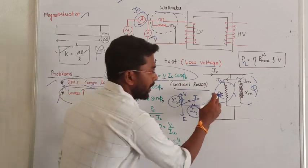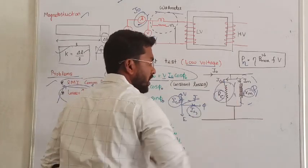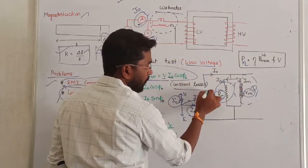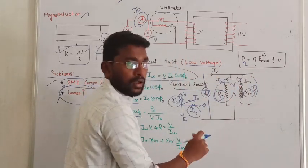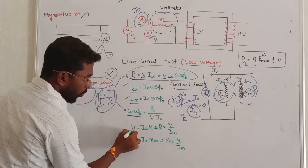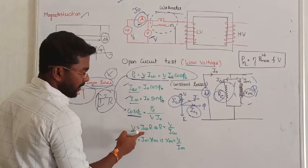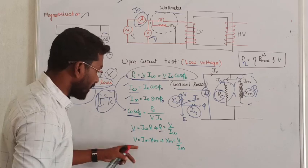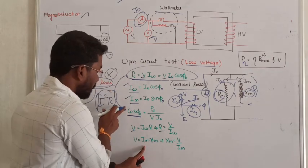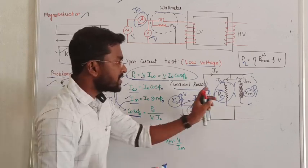Next we are going to calculate the shunt branch parameters — that is the core resistance value R0 and the magnetizing reactance value Xm. We can calculate the value of R0 from the voltage and the winding loss current. Similarly, the voltage drop across the magnetizing reactance: V equals Im times Xm, so Xm equals V divided by Im. This way we can calculate the shunt branch parameters from the open circuit test.